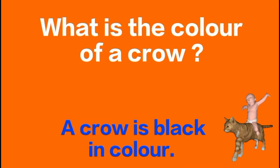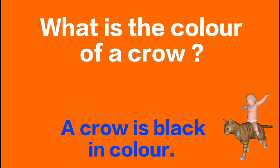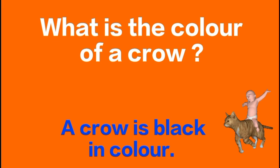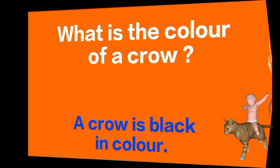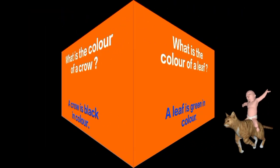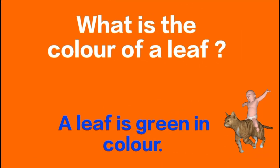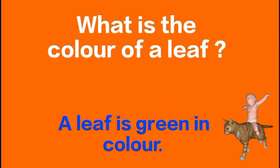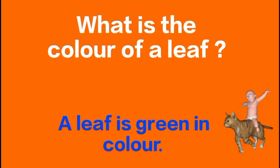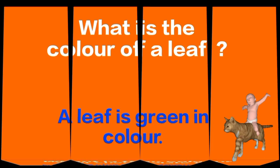What is the color of a crow? A crow is black in color. What is the color of a leaf? A leaf is green in color.